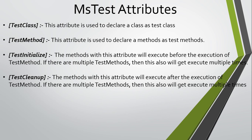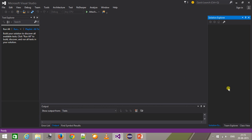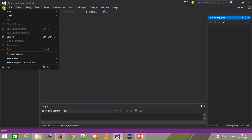These are the attributes provided by MSTest. The first two attributes are TestClass and TestMethod. The TestClass attribute is used to declare a class as a test class, whereas the TestMethod attribute is used to declare a method as a test method. Let me open my Visual Studio and create a new project.